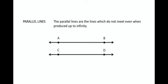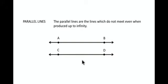Next is parallel lines. Parallel lines are those lines which do not meet each other even when they are produced up to infinity. This figure represents line AB and line CD; they are separated in such a way that they do not meet even if you produce them up to infinity. Such lines are called parallel lines, and they are supposed to lie on the same plane. The parallel lines are represented as AB parallel to CD.